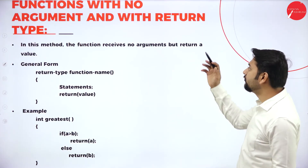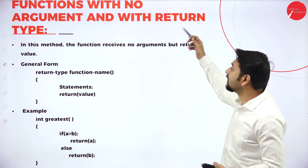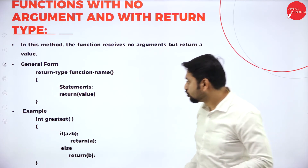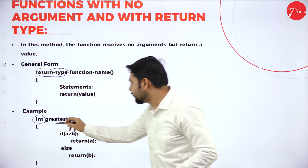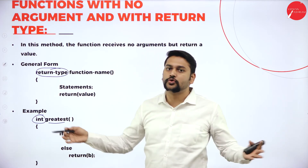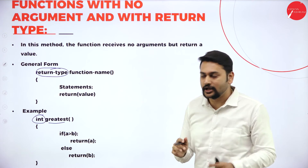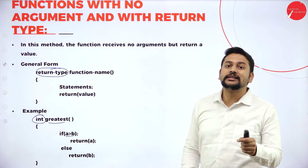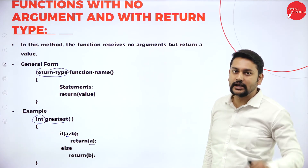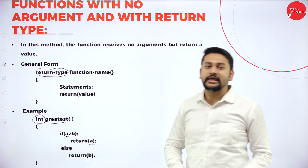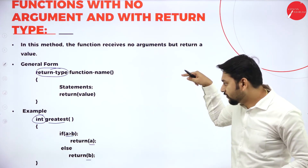Observe this carefully. Functions with no arguments — do I have arguments? No. With return type — I should return some value, so my return type should be int. Function name is 'greatest.' Do I have parameters? No — no argument, correct. What am I doing? I am checking two values: which one is greater. If A is greater than B, I return A; otherwise I return B. I am not printing anything — I am returning some value out of this function. That is what to observe in this example.